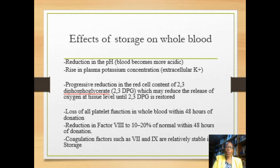Once the blood has been donated, sometimes it requires storage if there is no immediate need. It is also crucial to have enough in stock in case it is required — for example, in massive accidents. However, storage affects the various components of blood: the blood becomes more acidic, there is an increase in plasma potassium as cells rupture and release intracellular potassium, platelet function is also lost within 48 hours, and Factor 8 is reduced to about 10 to 20 percent, though other factors remain rather constant.